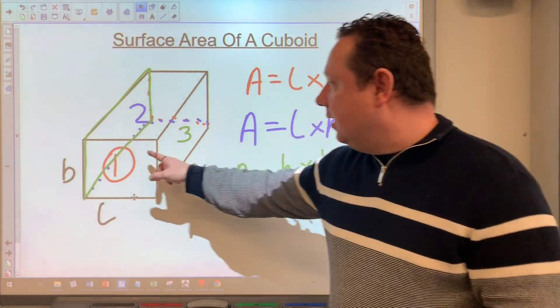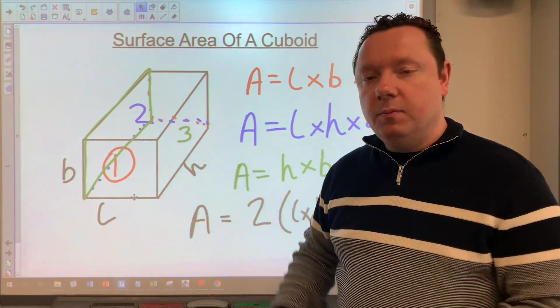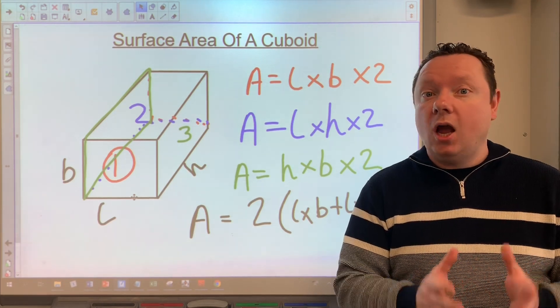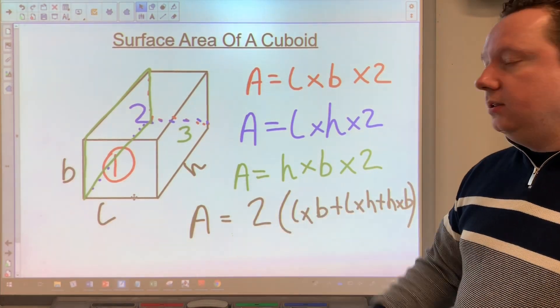So instead we're going to think of it as area of one, area of number two, area of number three. I need to get all of them and I need to double each of the answers and add it up. That's how we're actually going to do it. So we're not going to remember this formula.